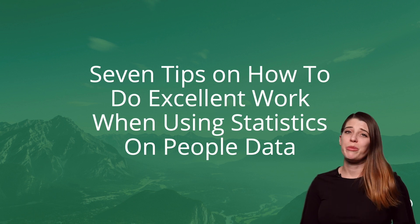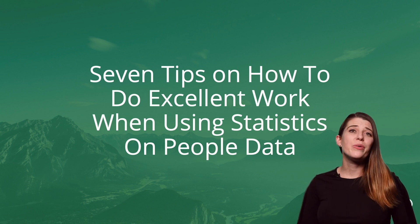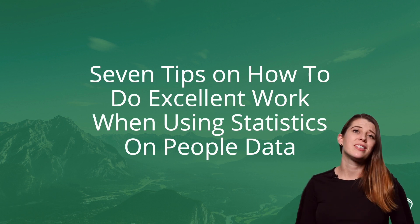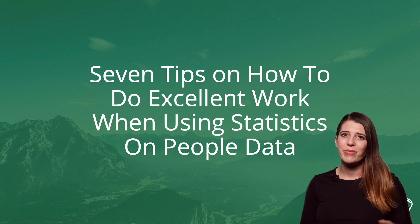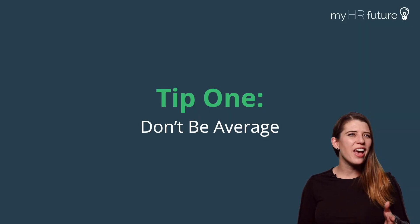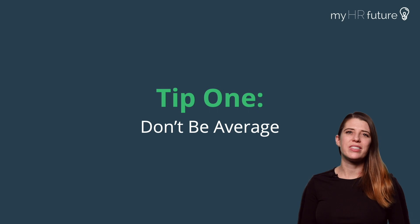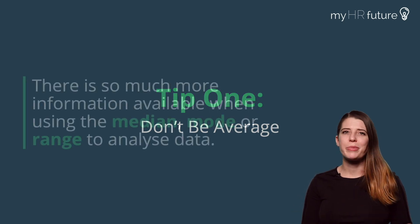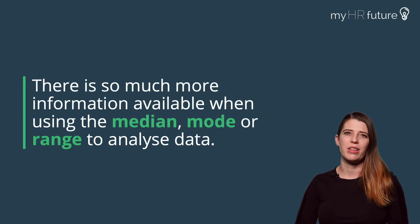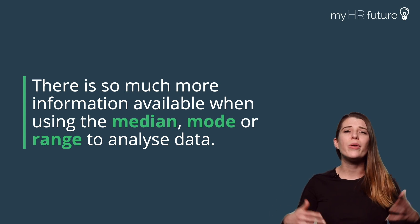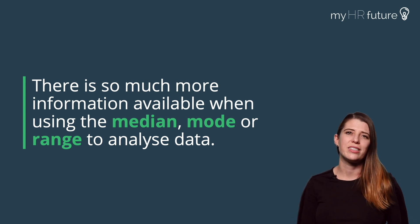Here are seven tips on how you can do excellent work when using statistics on people data. Tip number one: don't be average. Too many people stick to just the basic average numbers when there's so much more information available when talking about data in terms of its median, mode, range.